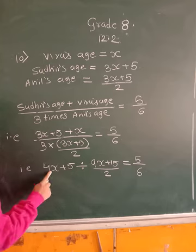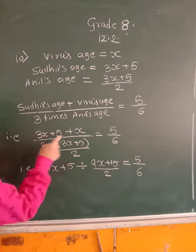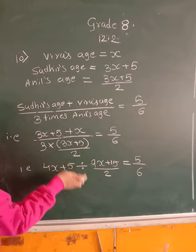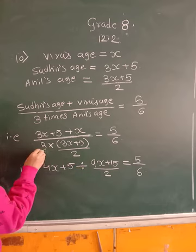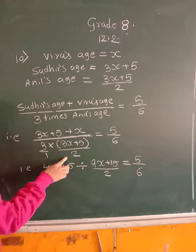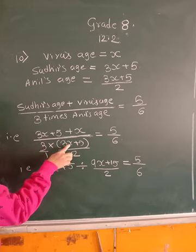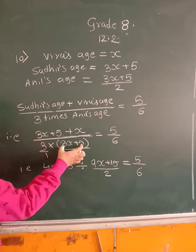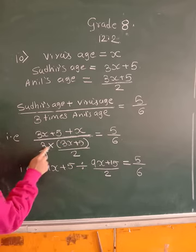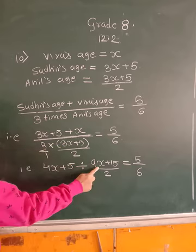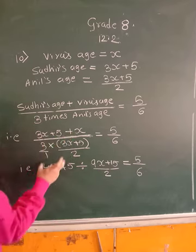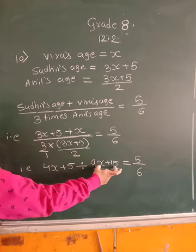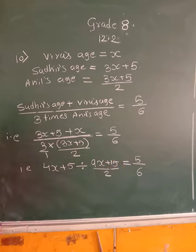This division, 3 means 3 upon 1. You know the rules of fraction multiplication, numerator into numerator, denominator into denominator. 3 times 4X is 9X, 3 times 5 is 15, divided by 1 into 2 is 2. So we have 4X plus 5 divided by 9X plus 15 upon 2, which equals 5 upon 6. Now let us solve.